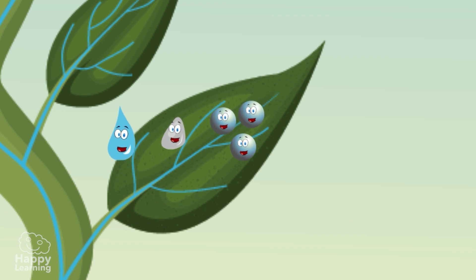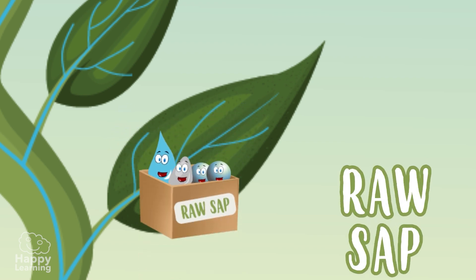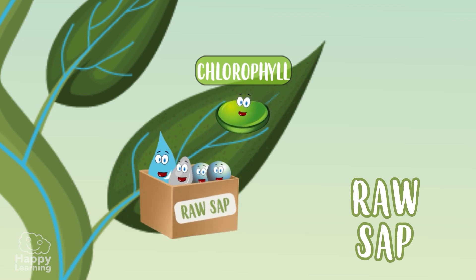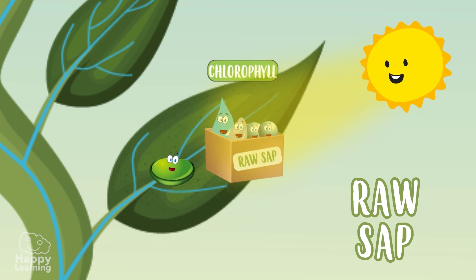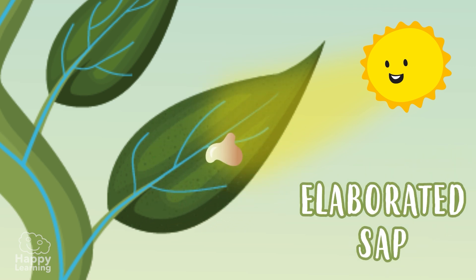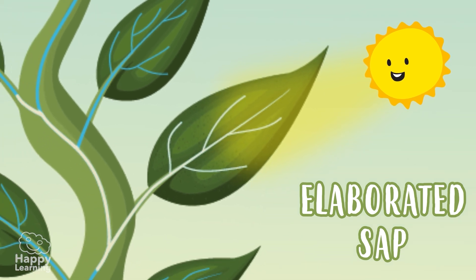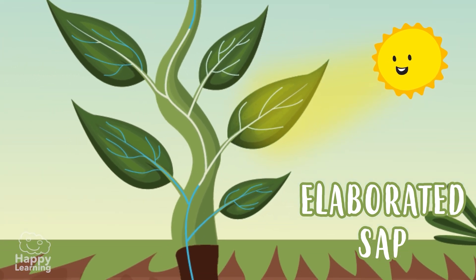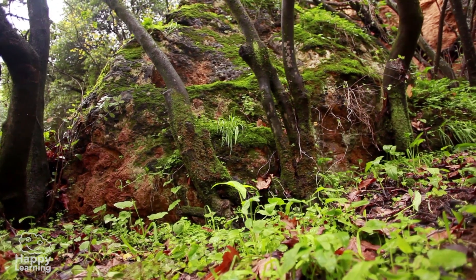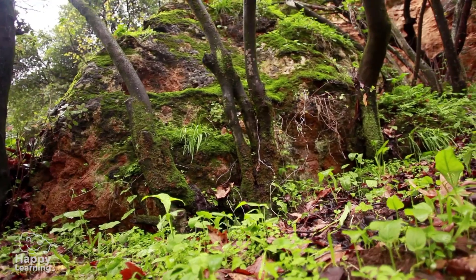All this — containing water, minerals, and carbon dioxide — is called raw sap. Now it's chlorophyll's turn. The chlorophyll in the leaves has all the necessary ingredients for photosynthesis to take place, and when it receives sunlight, the process begins by transforming the raw sap into elaborated sap.